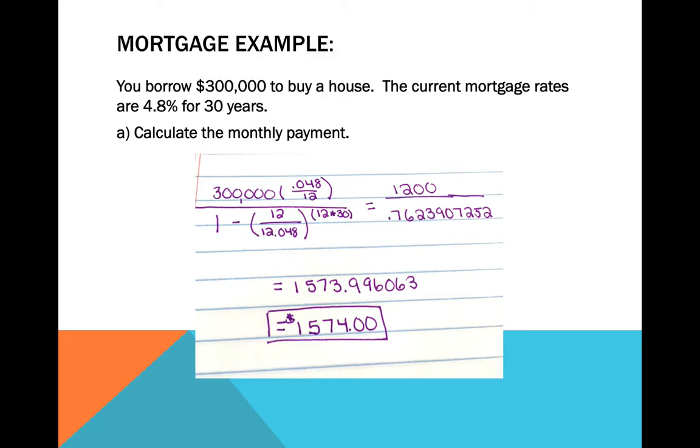The interest rate is .048, so you see in the numerator $300,000 times, in parentheses, our interest rate divided by 12. And then the denominator. This one's the tricky part. I have 1 minus in the denominator, parentheses, 12 divided by, now on the bottom here, it's supposed to be 12 plus R.